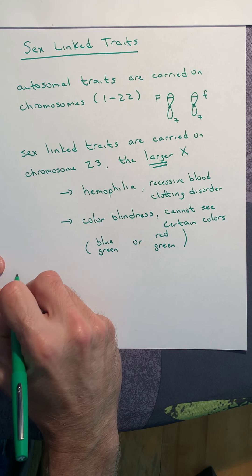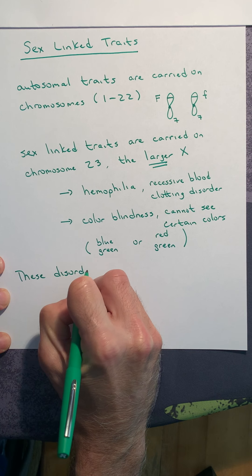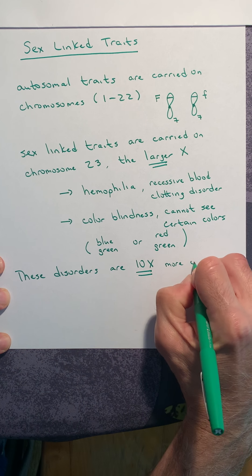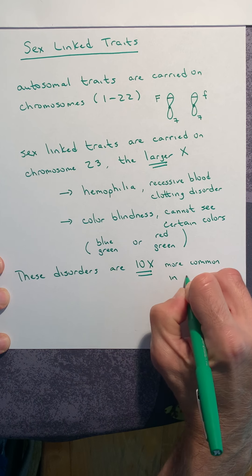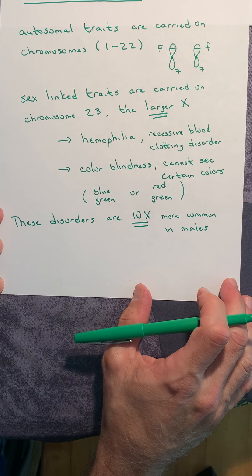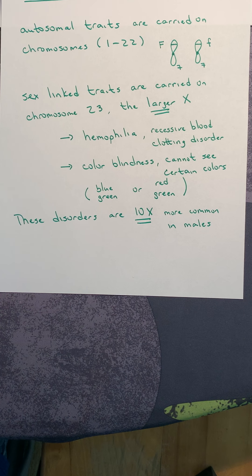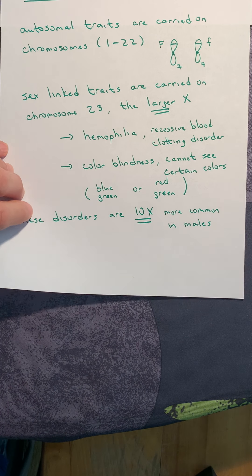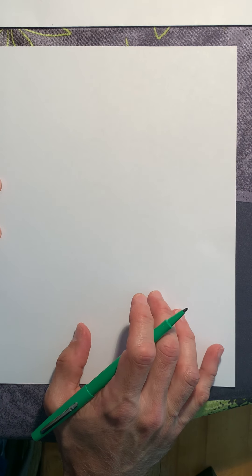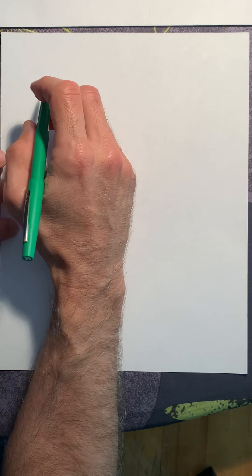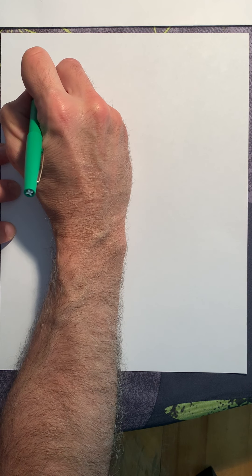So what's interesting is that these disorders are, get a load of this, 10 times more common in males. Much, much more common in males than in females. So we need to sit down and do some work with the genetics and figure out why these are 10 times more common in males than females. So for every one color blind female, you will find 10 color blind males. For every one female hemophiliac, you will find 10 male hemophiliacs. So when it comes to sex linked traits, it is a huge advantage to be female.